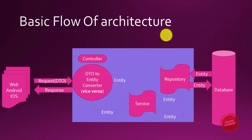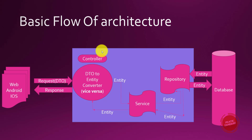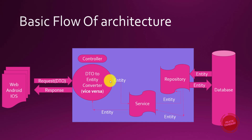So this is the diagram I created for you guys. There is Web, Android, and iOS — these kinds of applications. Whenever we want to send a request to our Java project, consider the blue square as Java. Whenever you are sending the request to Java, it comes in the form of a DTO, which is a Data Transfer Object. Here you implement a converter whose main purpose is to convert a DTO into the entity, because DTO is used to connect with the network layer, not the database layer. I want to keep both layers separate — DTO for network and entity for database.